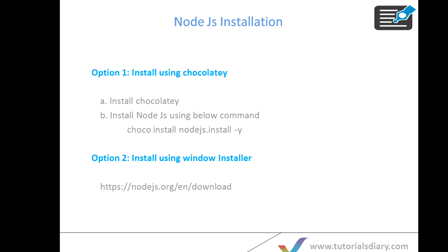The first option has two sub-steps: first, install Chocolatey to your system, then run the Chocolatey command to install Node.js. You have to ensure that the .NET framework is installed on your system. If you don't have it running, the installation will not work. This is a prerequisite before you install Node.js.